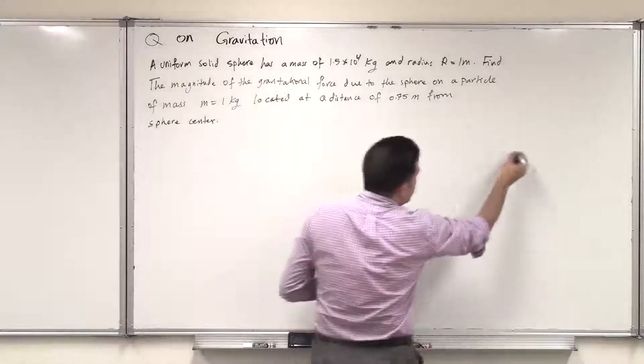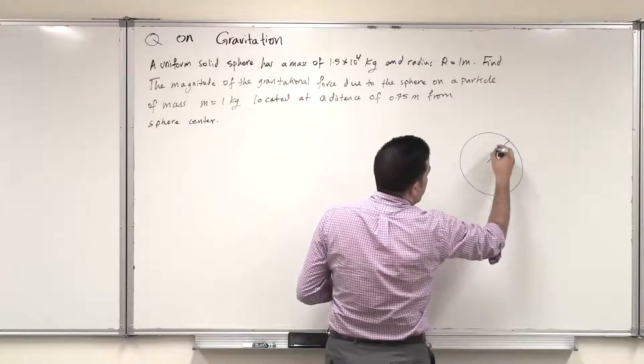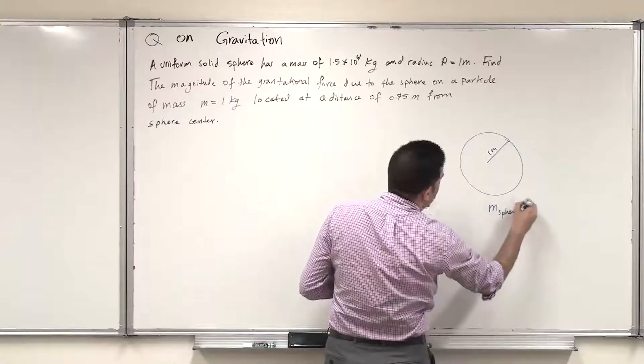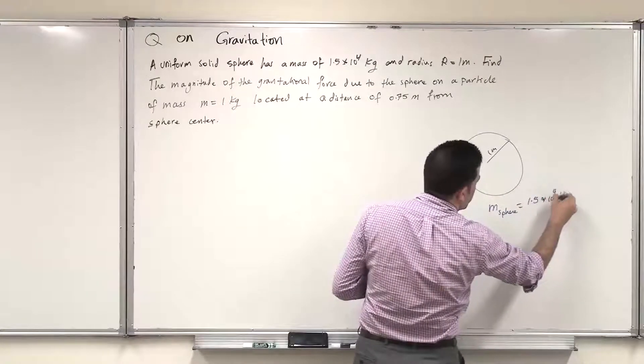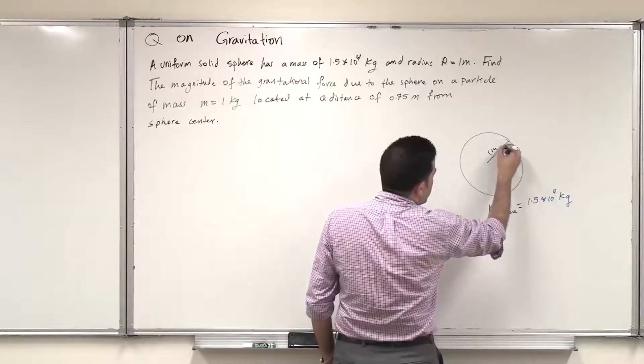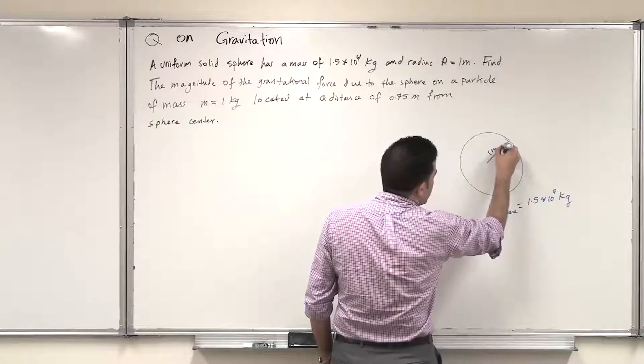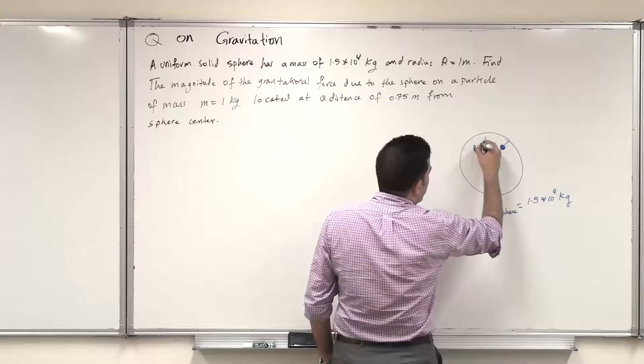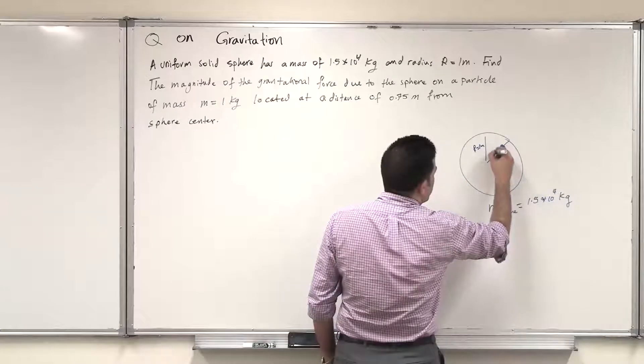So we have a solid sphere with a radius of 1 meter and a mass of 1.5×10^4 kilograms, and we place another mass at a distance 0.75. This mass is inside the sphere. So this is basically R, 1 meter, and this distance is 0.75. We call it small r.